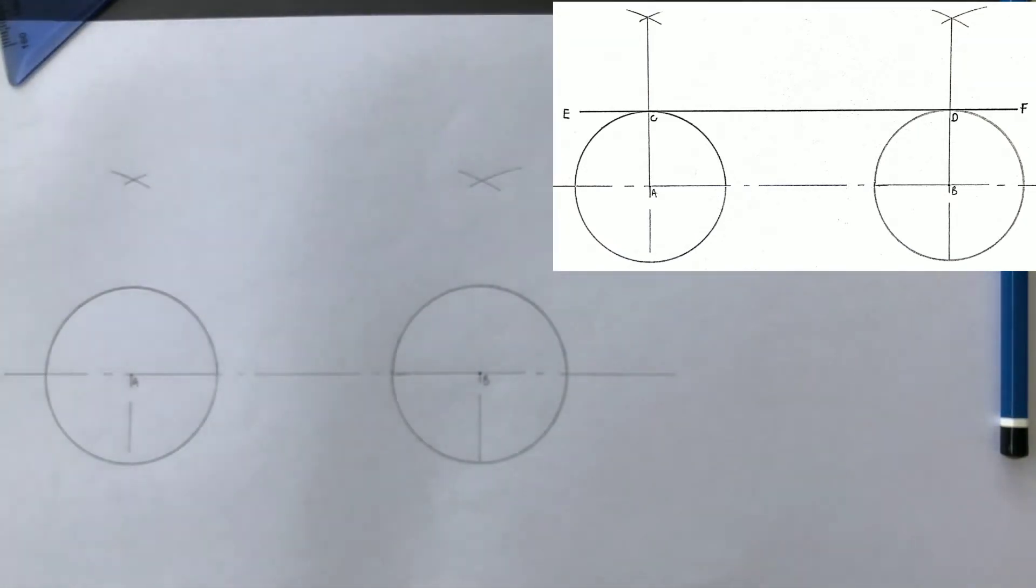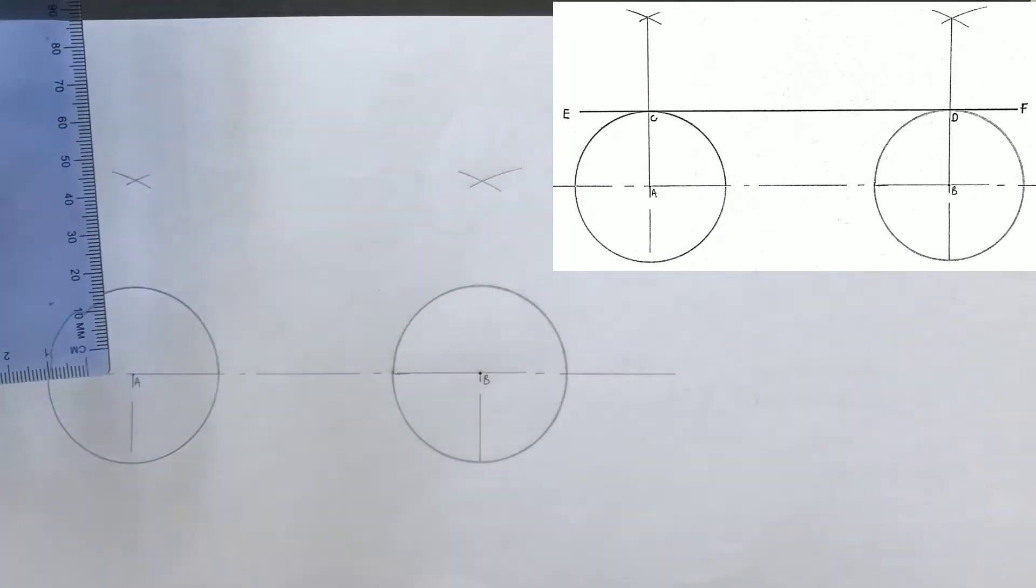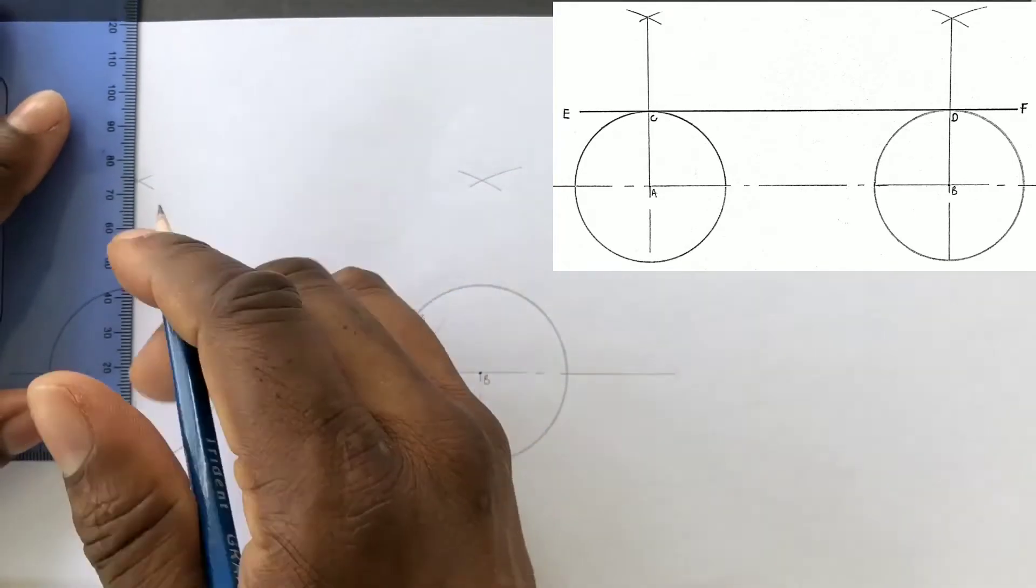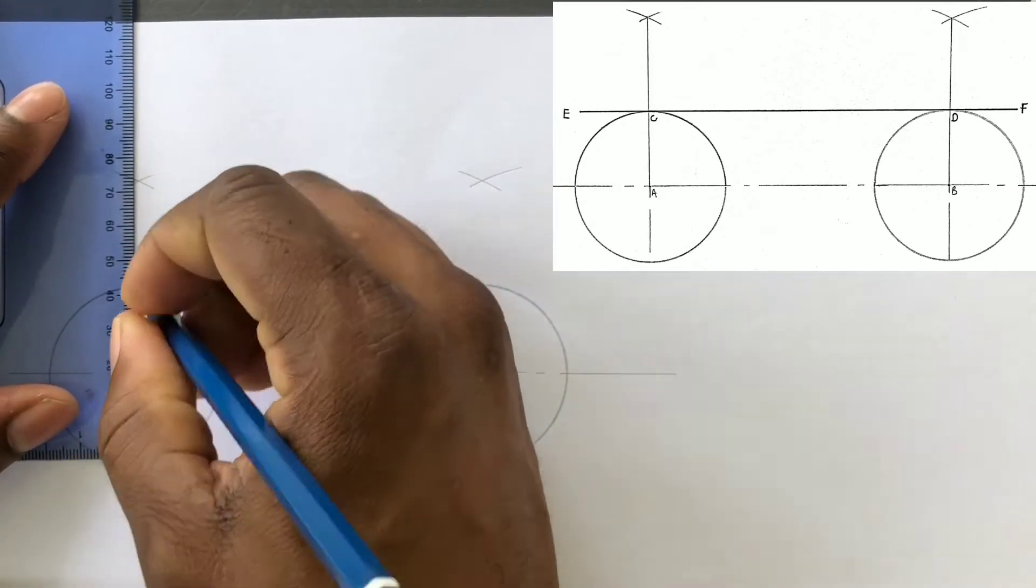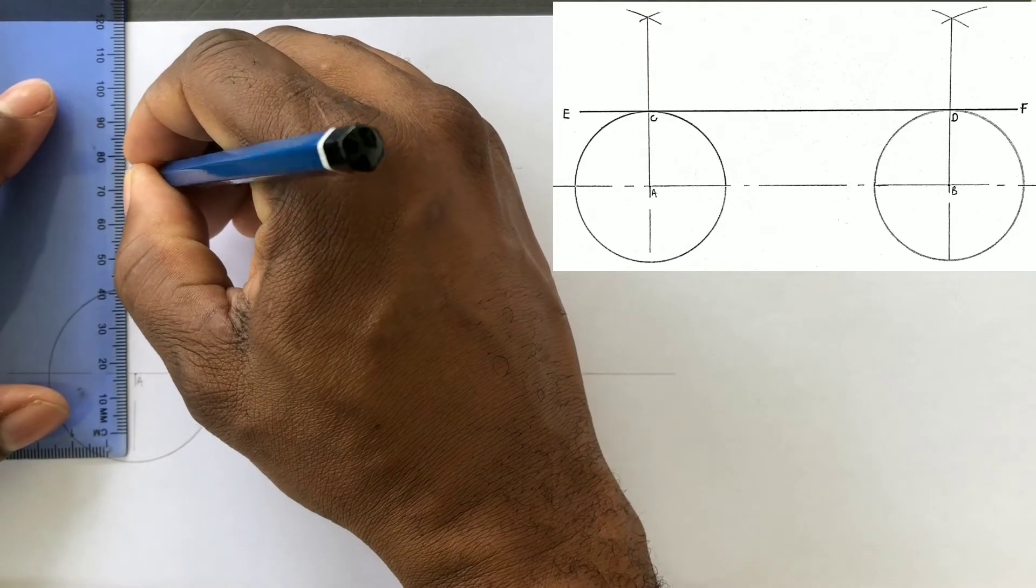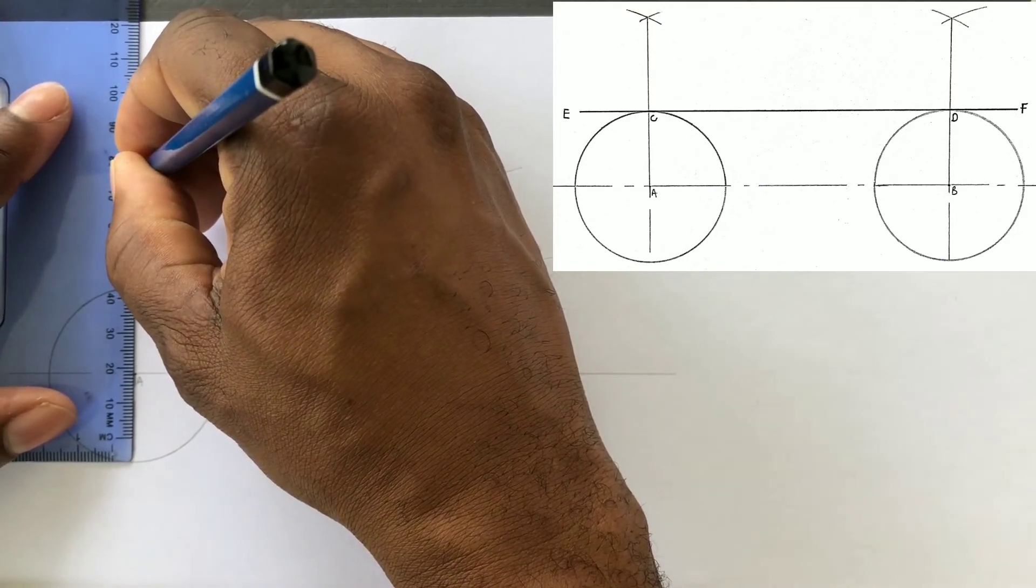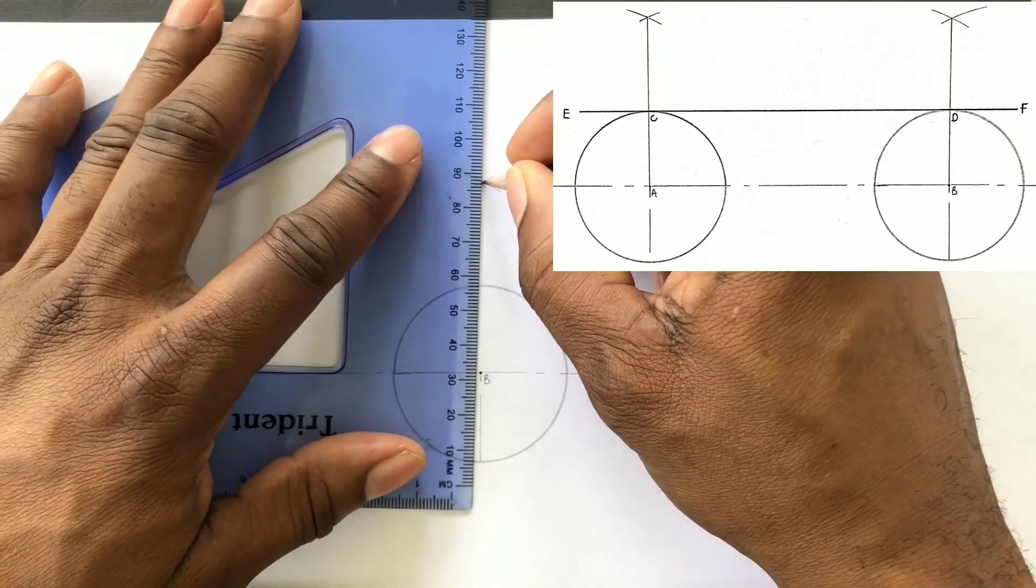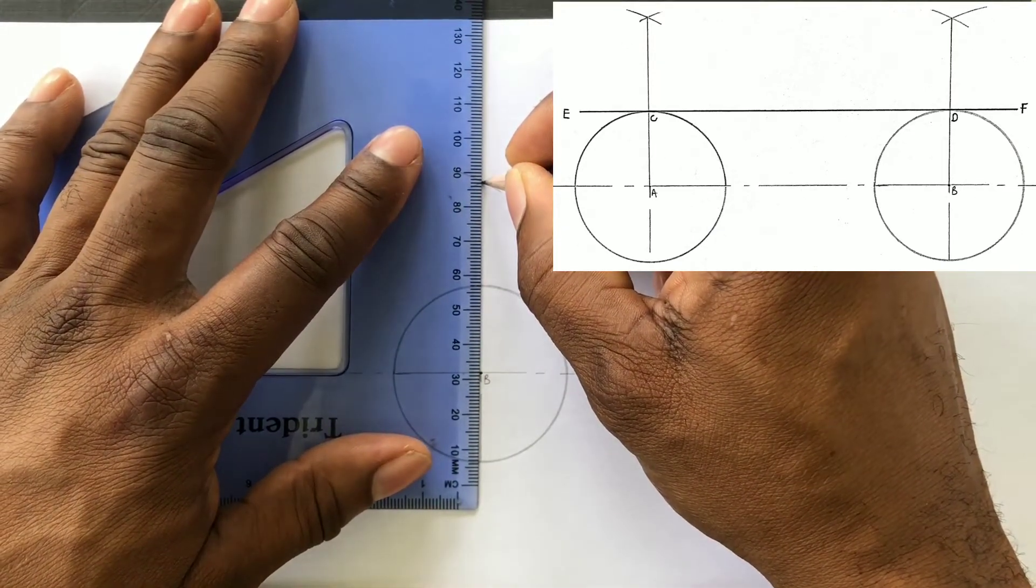We will now draw a line from point A vertically to the intersection of the first set of arcs. From the other intersection of arcs, we will draw a line to point B.